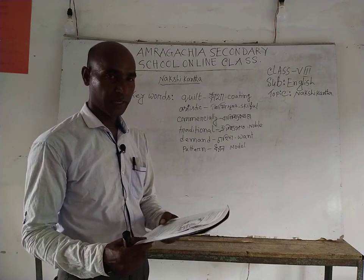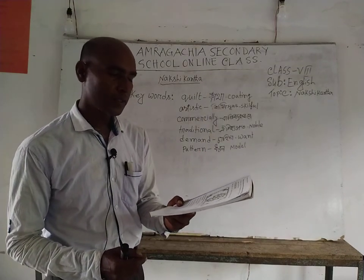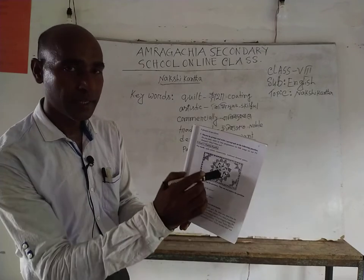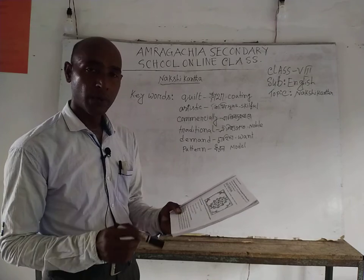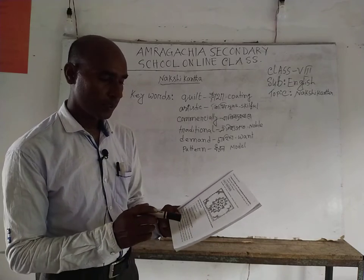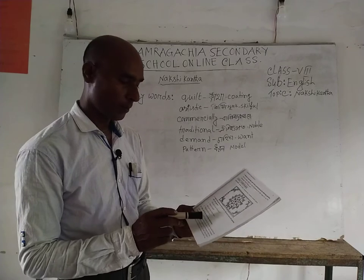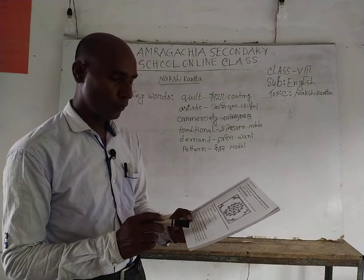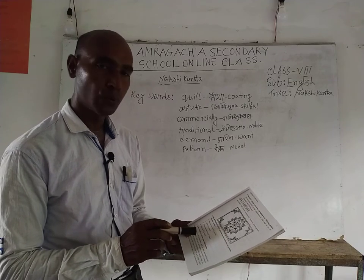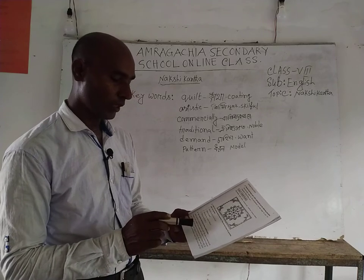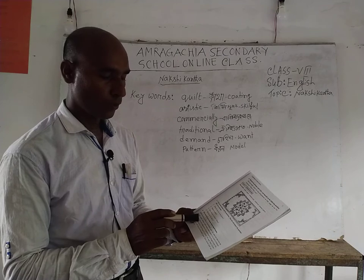What do you see in the picture? What is it called? Have you seen it before? What do we do with it? Now we are going to Session B — read the text to know about Nakshikatha.